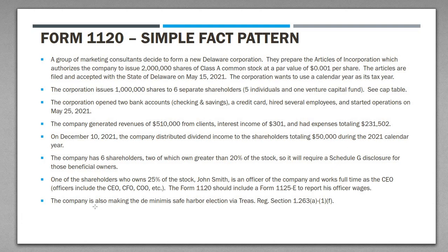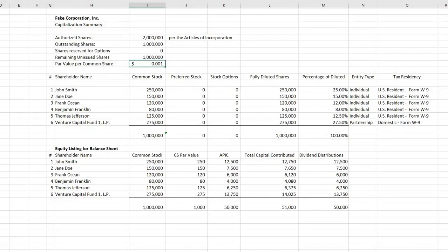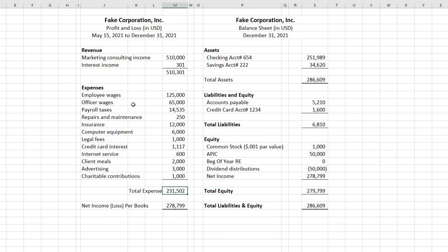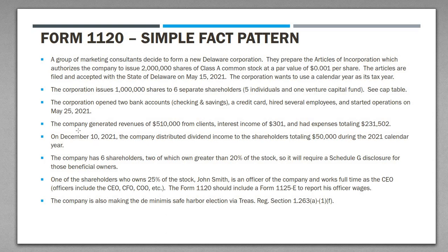The company's operations generated $510,000 from clients as operating revenue, interest income on the savings account of $301, and expenses totaling $231,502. That $231,502 comprises a number of different expense types visible in the financial statements. On December 10th, 2021, the company distributed dividend income to shareholders totaling $50,000, distributed pro-rata depending on how much stock each shareholder owned.